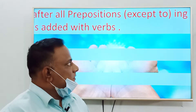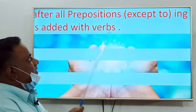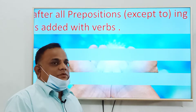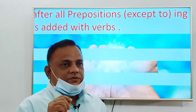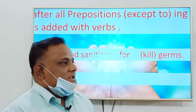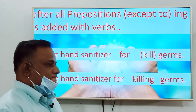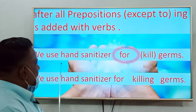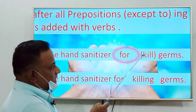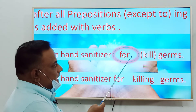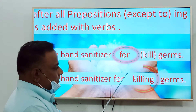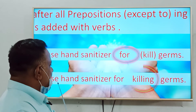A very important point: you have to use ing with the verb after all prepositions. If you see any preposition before the verb, you have to use ing with the main verb. As soon as you see a preposition before the verb, you must add ing with the main form of the verb. The example is: 'We use hand sanitizer for killing germs.' So the right answer is 'killing.'